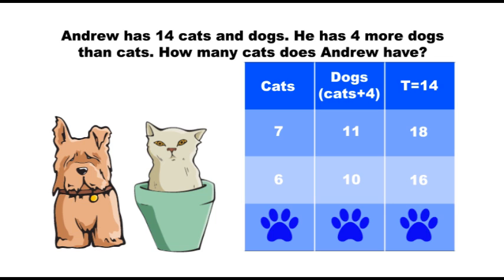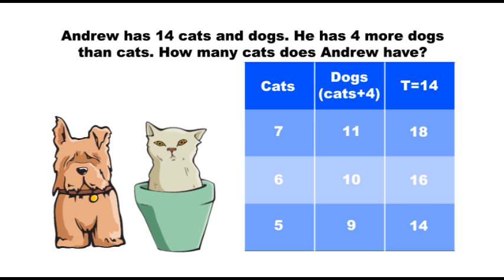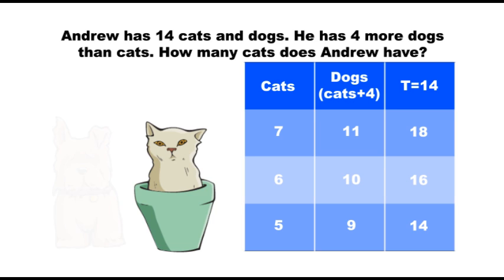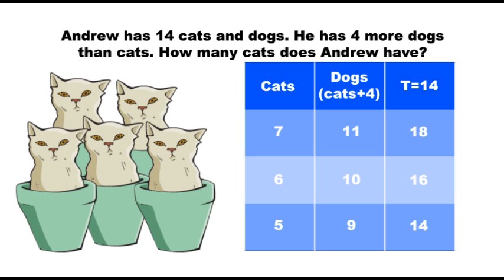Our third guess is 1 less than 6, which is 5. If Andrew has 5 cats, he has 9 dogs, because 5 plus 4 equals 9. And 5 cats plus 9 dogs equals 14, which is his total. The problem asks how many cats does Andrew have? We can see on the chart that he has 5 cats.